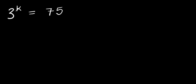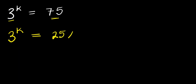How to solve this: 3 to the power of k equals 75. We are solving for all values of k that satisfy this equation. What we are going to do is express 75 as a product of 25 times 3, so 3 to the power of k equals 25 times 3, which is 75.